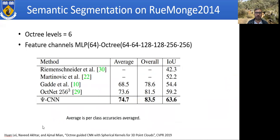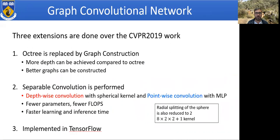These are our results on the outdoor LiDAR dataset — we also outperform previous methods. Moving on to graph convolutional networks: the octree is not a very general-purpose network. We prefer graph convolutions, which are more general and allow more variety in graph construction. We add another contribution: separable convolution introduced into the spherical convolution kernel, giving us fewer parameters, fewer FLOPs, and faster learning. The implementation has also moved to TensorFlow with public code provided.